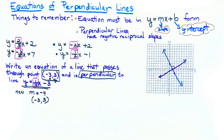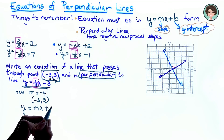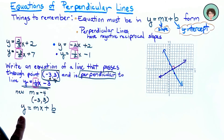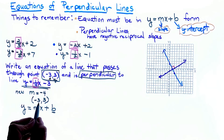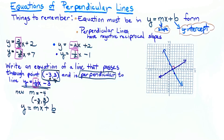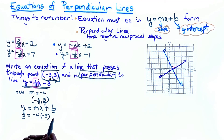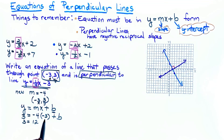Writing y equals mx plus b, I substitute these three values. My y is 3, the new slope is negative 4, and x is negative 3, plus b. So 3 equals negative 4 times negative 3, which is 12, plus b. To get the variable alone, I subtract 12 from both sides: b equals 3 minus 12, which is negative 9.